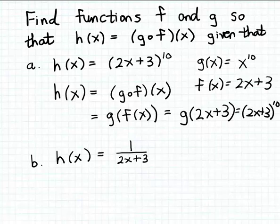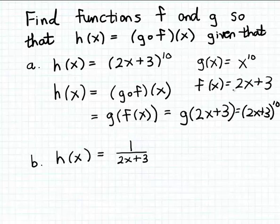We found the two functions: g of x equals x to the 10th power, and f of x equals 2x plus 3. So when we compose them — when we calculate g of f of x — we get the formula for h. This process, by the way, is called decomposition. We're decomposing the formula for h into two simpler function formulas.